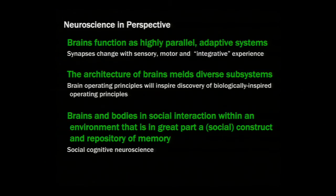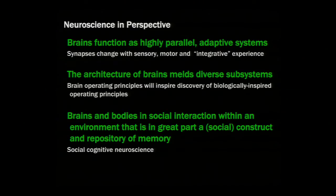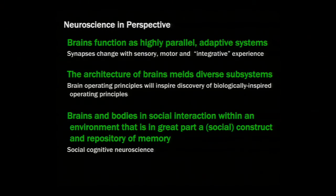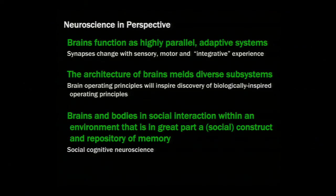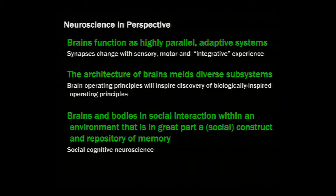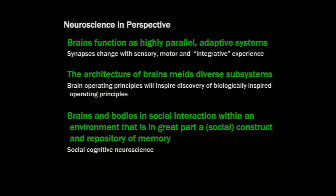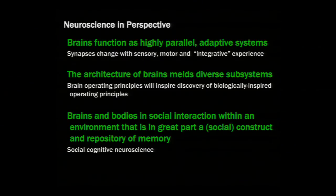To get us serious about the richness of neuroscience — beyond a blob here correlates with a thought there — when we understand the brain we have highly parallel adaptive systems. That word adaptive ties in with synaptic plasticity, the changes in sensory motor and integrative experience that bind them. The architecture of the brain melds diverse subsystems. The hope is we'll find operating principles of the brain that help us understand its importance to architects, and also develop new technologies that learn from the brain. In the last 10 years especially, we've become more concerned with social cognitive neuroscience — looking at brains in interaction.